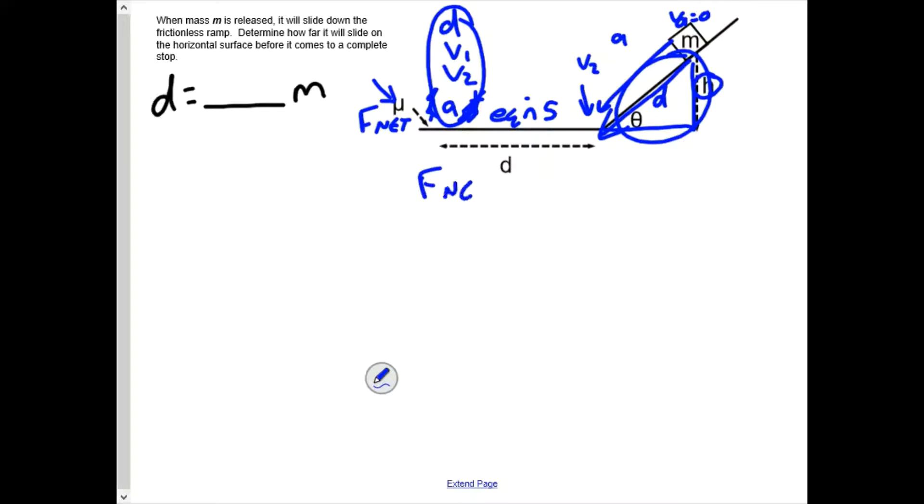So here are the formulas we're going to need. F_net equals MA. We're going to need V2² equals V1² plus 2AD. And if we want, we can call this A, since we're using kind of a generic version of the equation right now, and we'll substitute in our values for V later. We have those two equations, and we also have the sine ratio. Sine θ is opposite over adjacent.